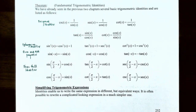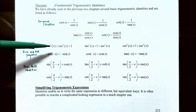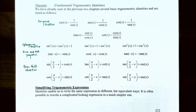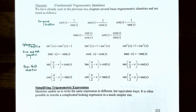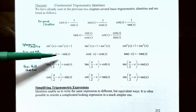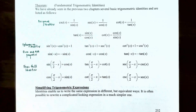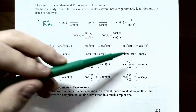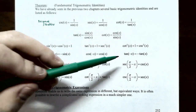There are three Pythagorean identities. First, sine squared of x plus cosine squared of x equals 1. Second, tangent squared of x plus 1 equals secant squared of x, obtained by dividing the first identity by cosine squared of x. Third, cotangent squared of x plus 1 equals cosecant squared of x, obtained by dividing the first identity by sine squared of x. We also have even and odd properties: sine of negative x equals negative sine of x; cosine of negative x equals cosine of x; tangent of negative x equals negative tangent of x.